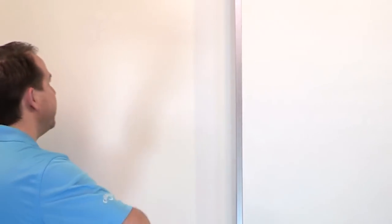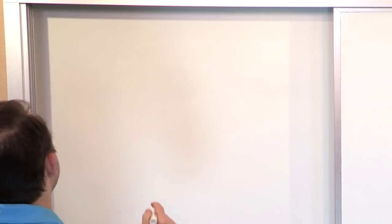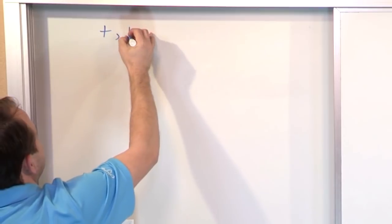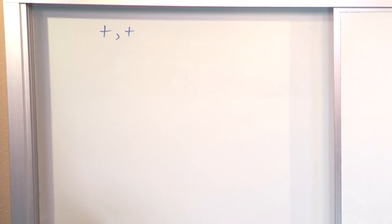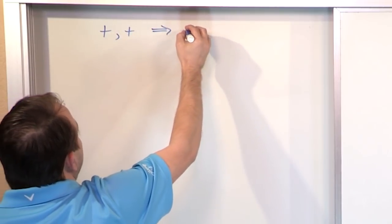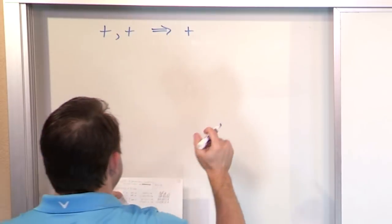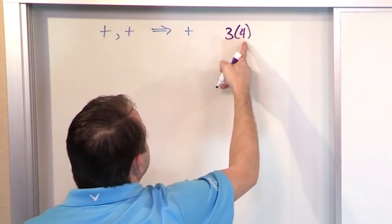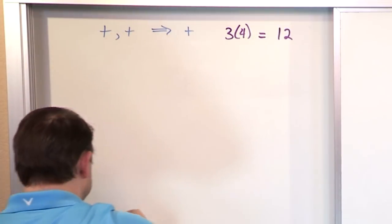Just to review and make sure that you're on the same page with me, the general rules of multiplication go like this. If you're multiplying a positive number times a positive number — this is the kind of thing we always multiply when we first learn multiplication — then you will always get a positive number. For instance, 3 times 4: it's a positive 3 and a positive 4, so the answer is a positive 12.